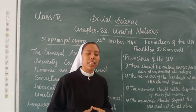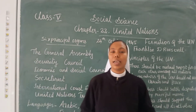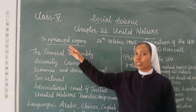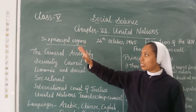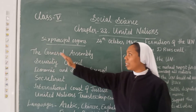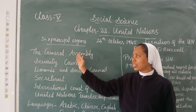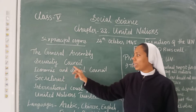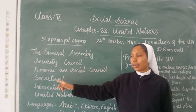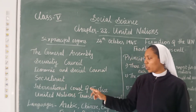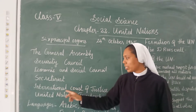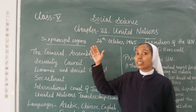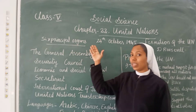The UN has six principal organs. First, the General Assembly; second, the Security Council; third, the Economic and Social Council; fourth, the Secretariat; fifth, the International Court of Justice; and sixth, the United Nations Trusteeship Council.